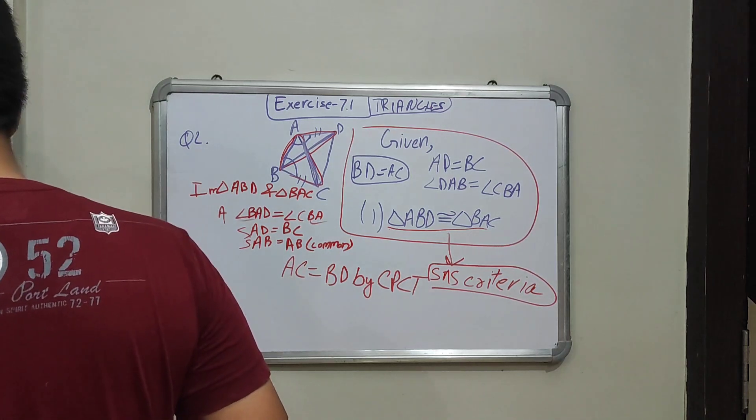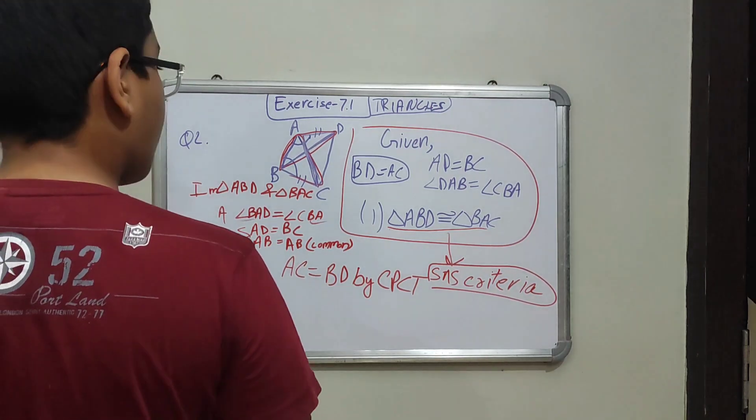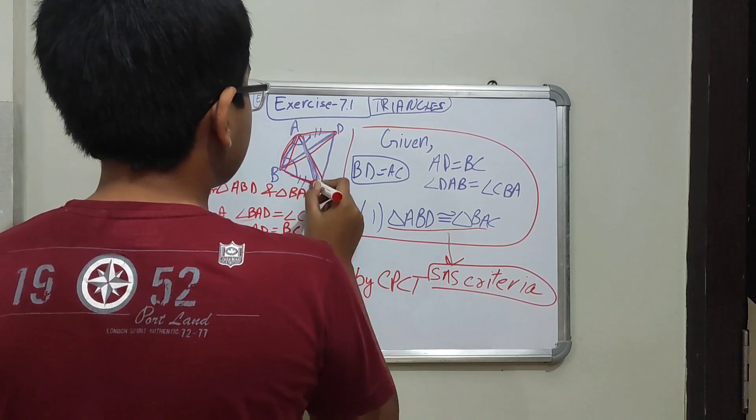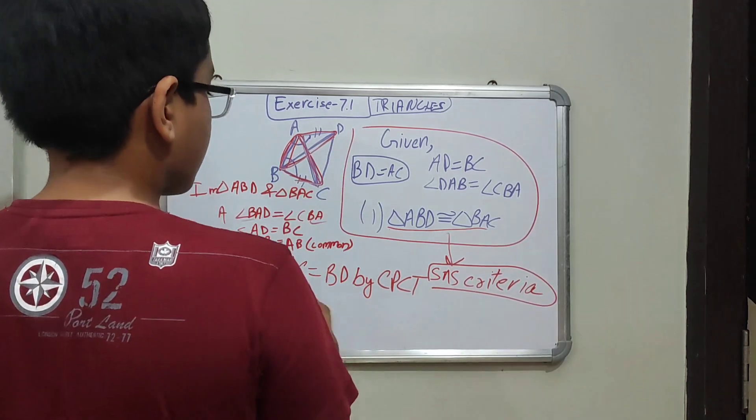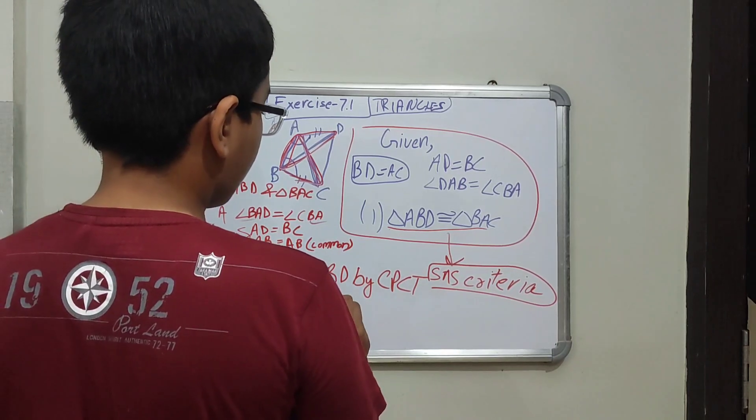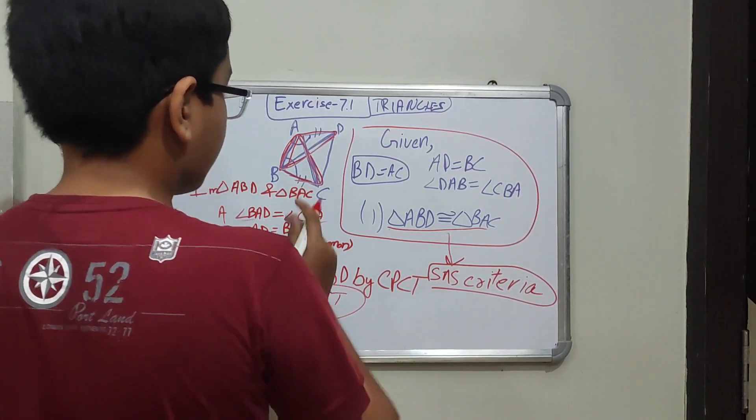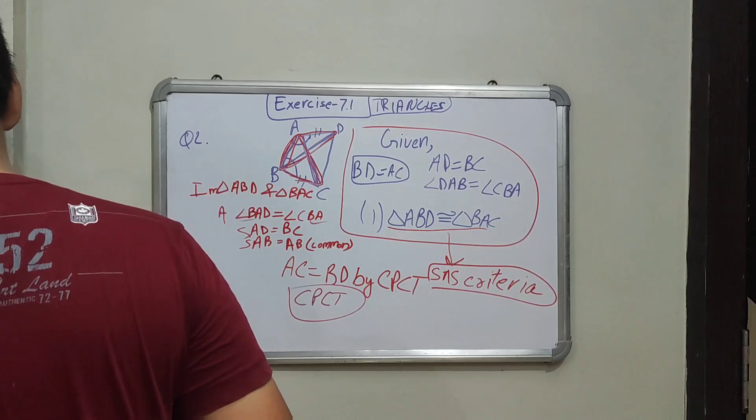And one more part is angle ABD is equal to angle BAC. Angle ABD is equal to angle ACB. Then by CPCTC we can say that both angles are equal.